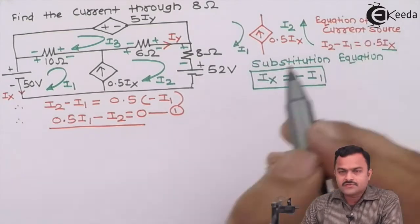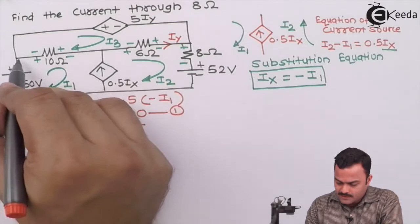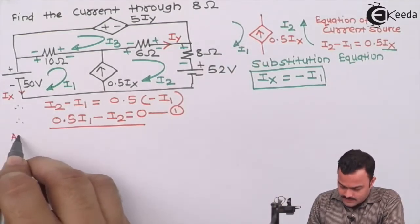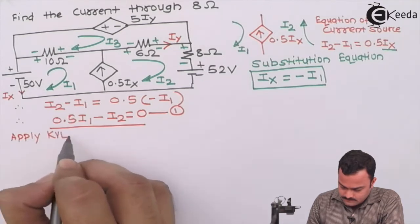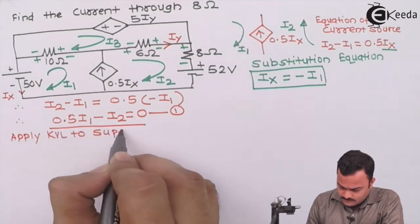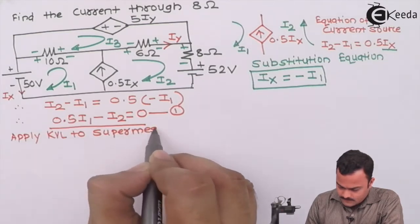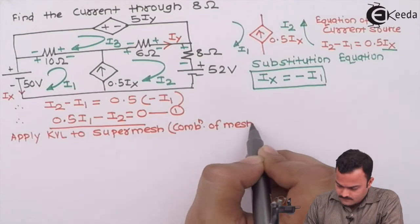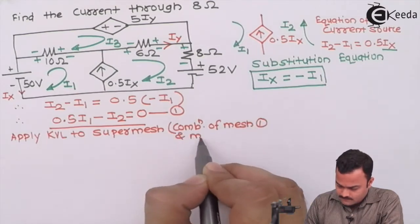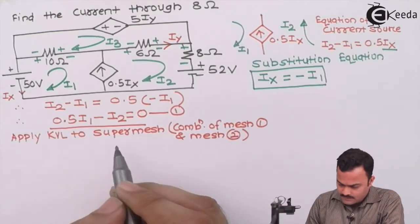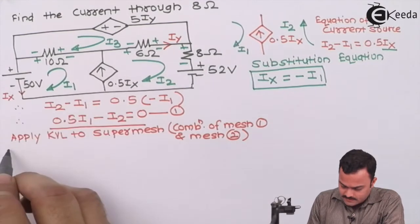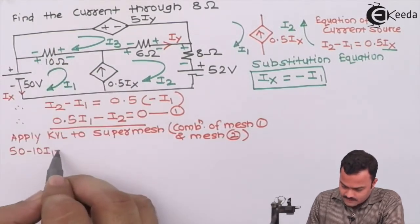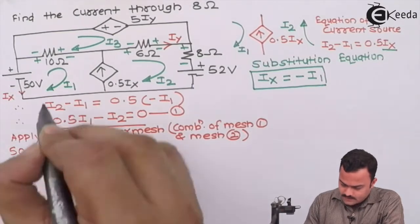We have one equation from the current source. To get a second equation, we apply a super mesh to the combination of mesh 1 and mesh 2. Starting KVL traversal: minus 50, minus 10 I1, plus 10 I3. We have to bypass the current source.